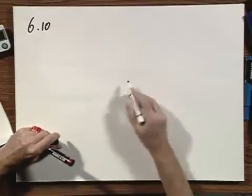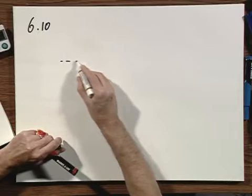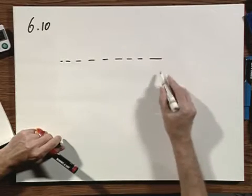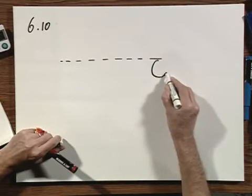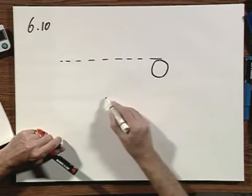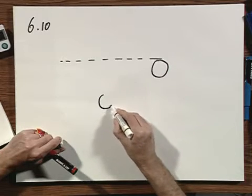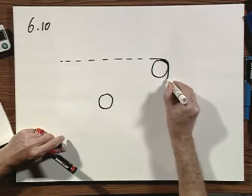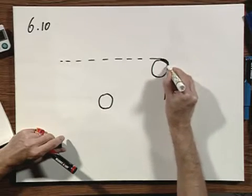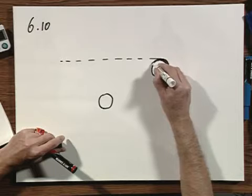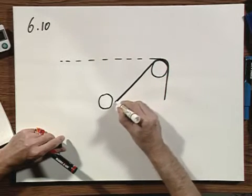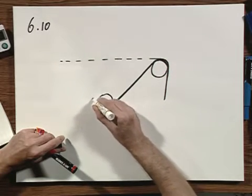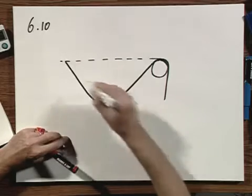Problem six ten. Here we have a rather unphysical setup with two massless pulleys. This is a pulley which is massless, and here there is a pulley which is massless. And there is a string over the pulley, the string is also massless, goes under here and goes through there.